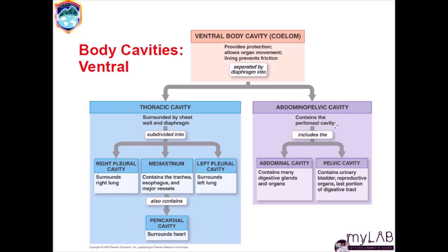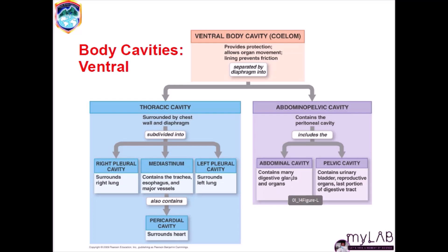The abdominopelvic cavity contains the peritoneal cavity, which includes the abdominal cavity containing the digestive glands and organs. It also includes the pelvic cavity, which contains the urinary bladder, reproductive organs, and the last portion of the digestive tract, including the rectum and the inner portions.